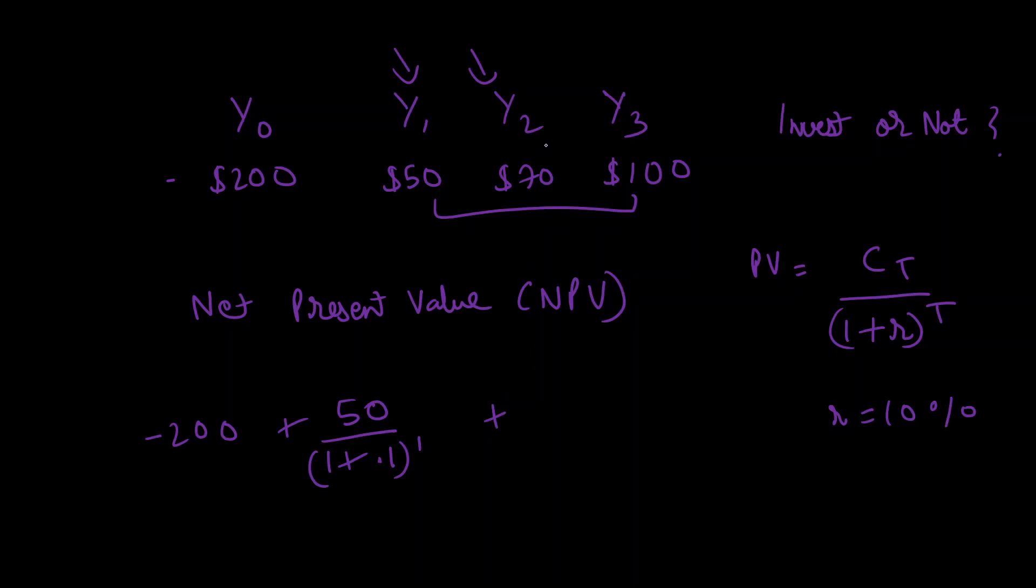Now coming to year two: you get 70 divided by (1 + 0.1) raised to the power two, because we're talking about two periods. Similarly for year three, you'll raise it to the power three. So for year three we have 100 divided by (1 + 0.1) raised to the power three. Let me separate all of this.